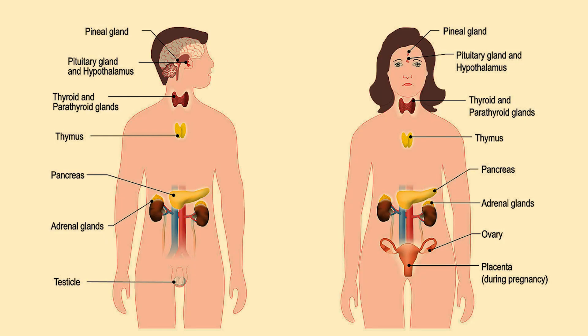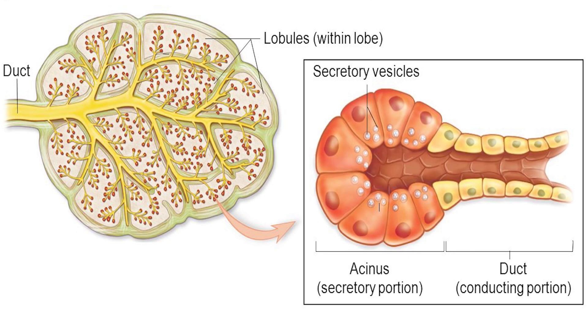Thyroid is an endocrine gland. Endocrine glands pour their secretions directly into the blood, and these secretions are called hormones. Other endocrine glands include parathyroid, adrenal, pituitary, testes, and ovaries. In contrast, exocrine glands pour secretions via a duct into a lumen, intestinal tract, or to the exterior — examples include liver, pancreas, parotid gland, submandibular gland, lacrimal glands, and sweat glands.